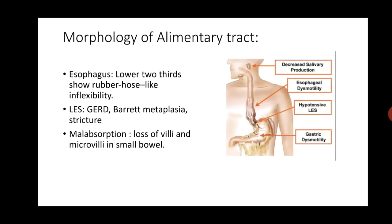The GI tract is also involved. The esophagus shows a rubber hose-like inflexibility in the lower two-thirds due to fibrosis, hampering its motility. The lower esophageal sphincter fails to close, causing gastroesophageal reflux disease. Chronic reflux of gastric content into the lower esophagus leads to Barrett metaplasia, where the squamous epithelium of the esophagus is replaced by columnar epithelium, a condition that can give rise to adenocarcinoma in the long run. Loss of villi and microvilli in the small bowel can also lead to malabsorption.